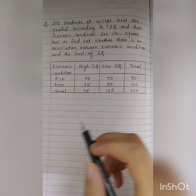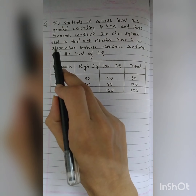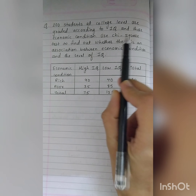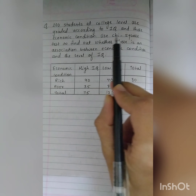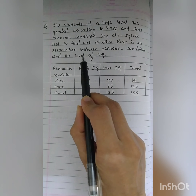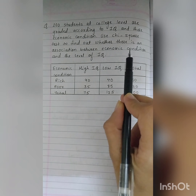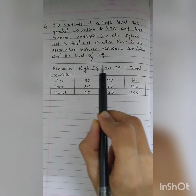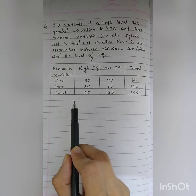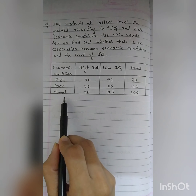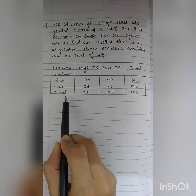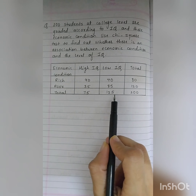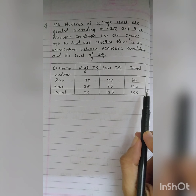Let's start with the question. 200 students at college level are graded according to their IQ and economic condition. Use the chi-square test to find out whether there is an association between economic condition and the level of IQ. The first column is economic condition, the second column is high IQ, the third column is low IQ, and the last column is the total.